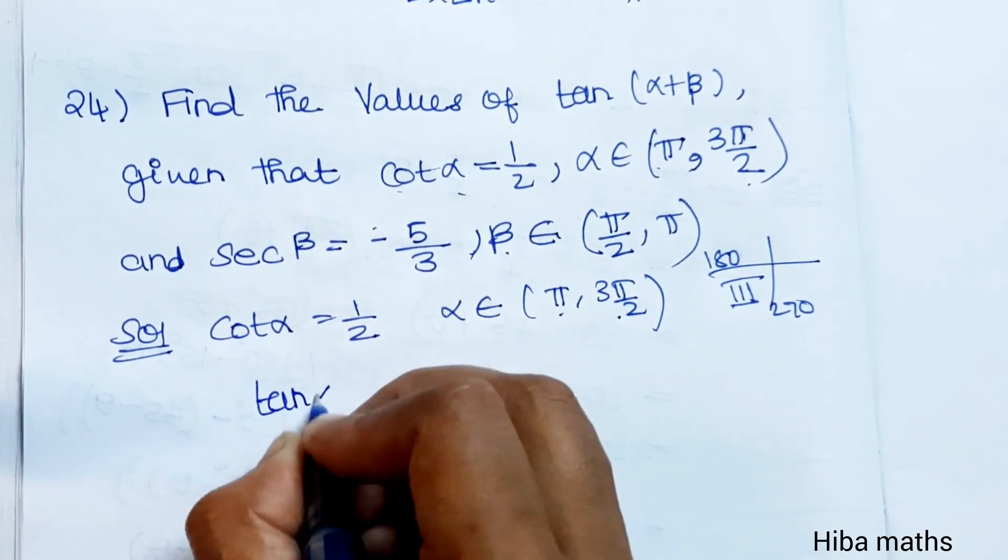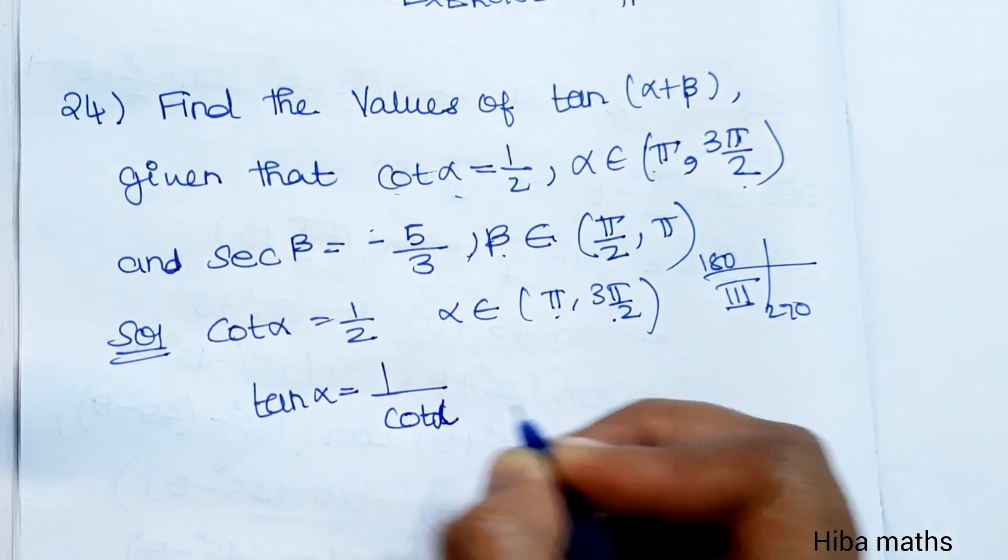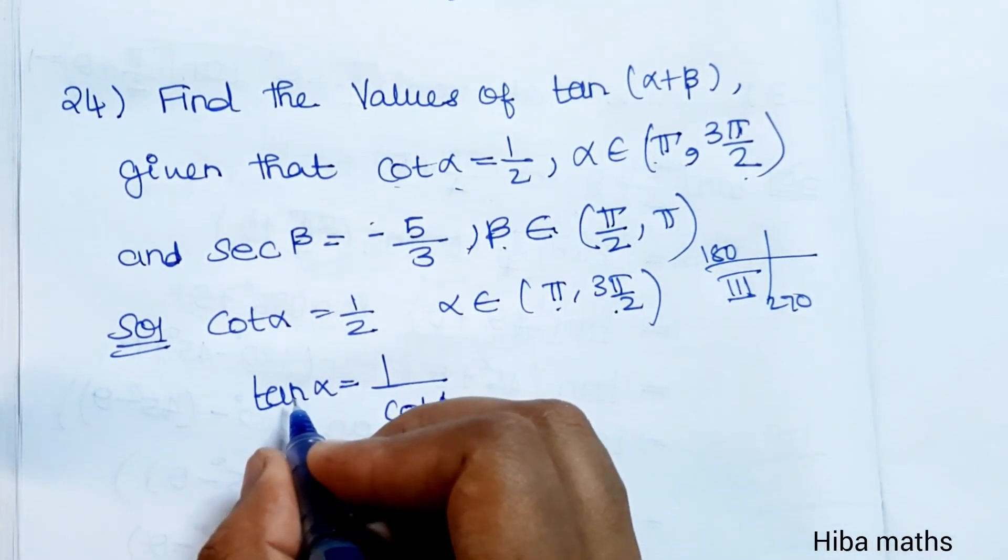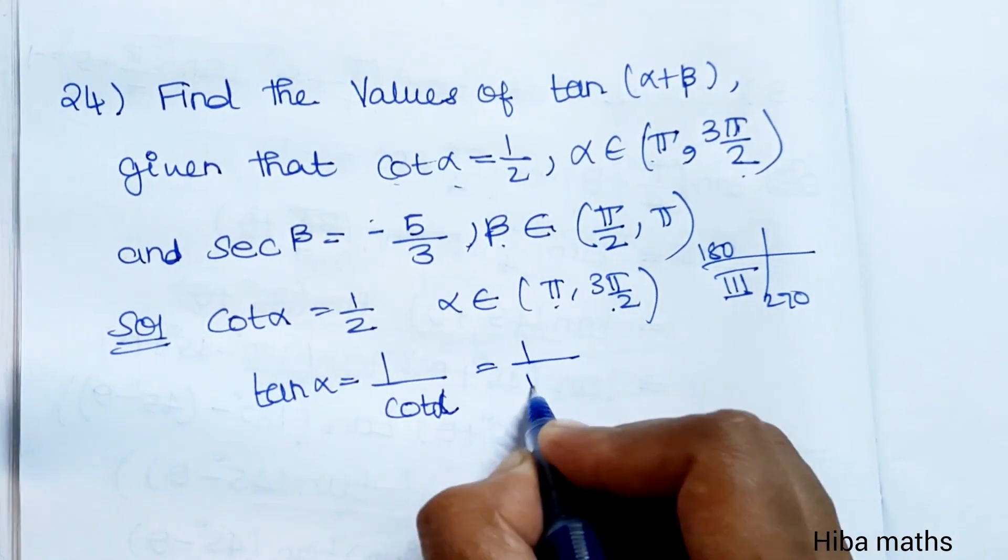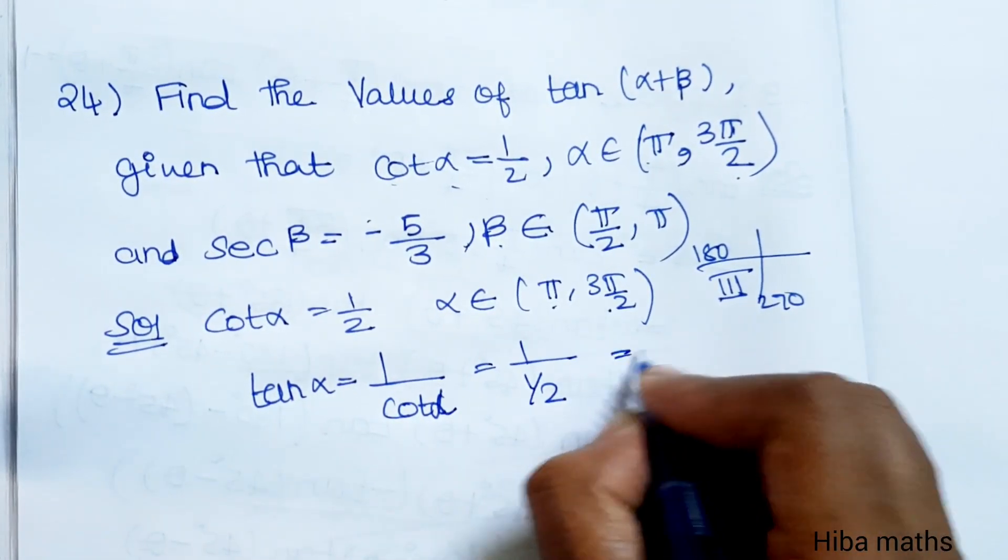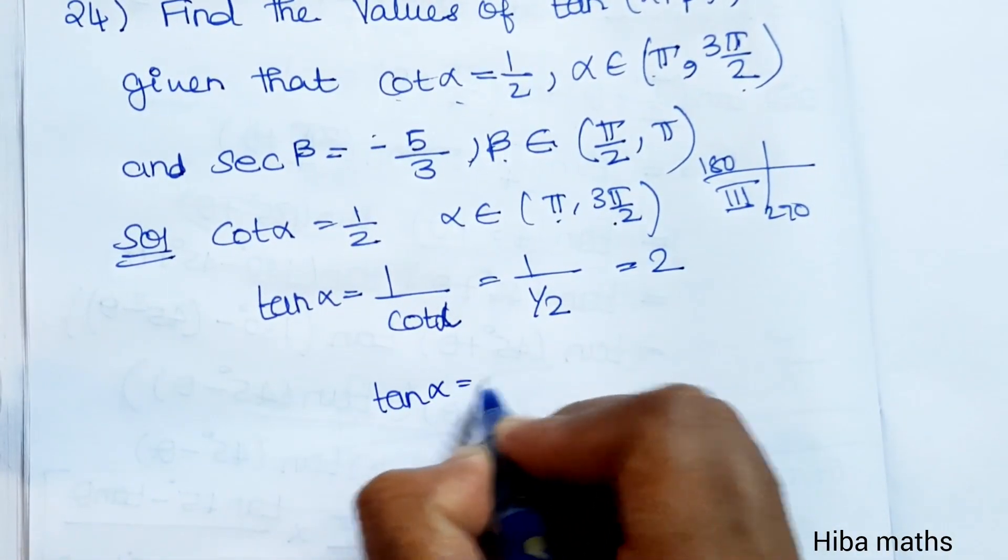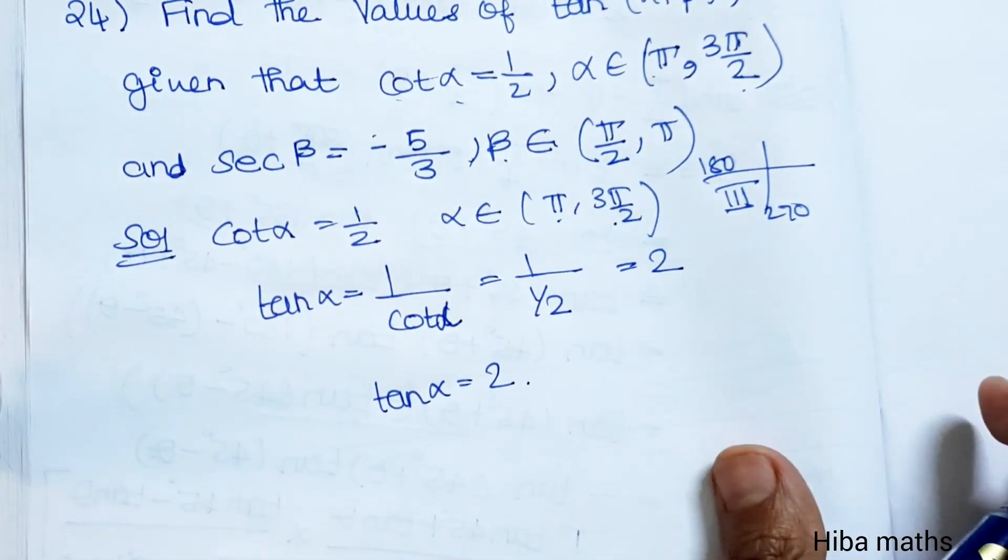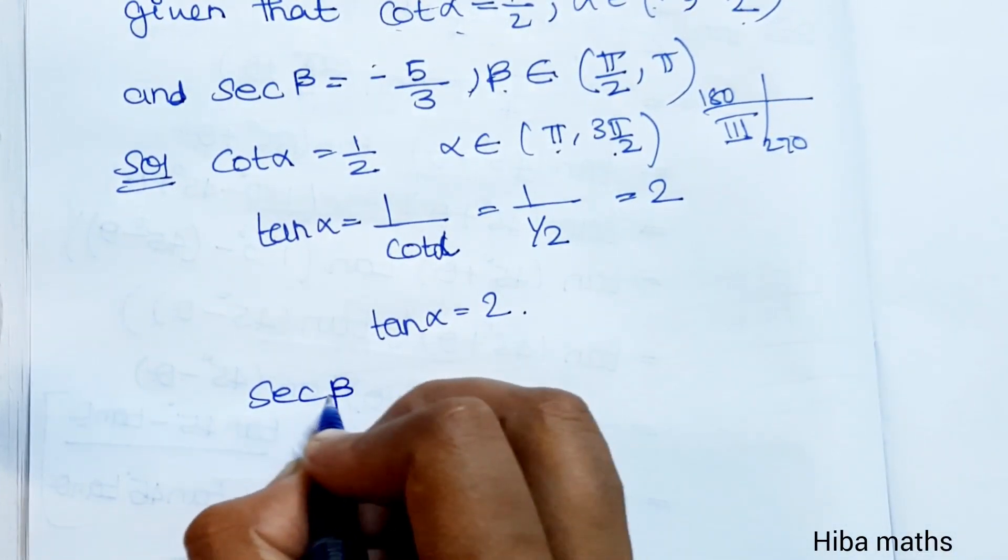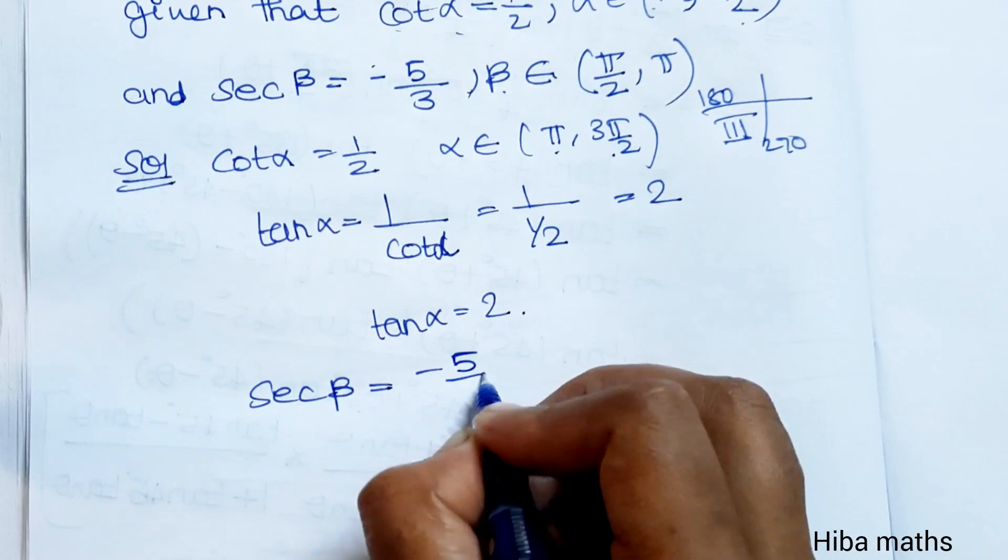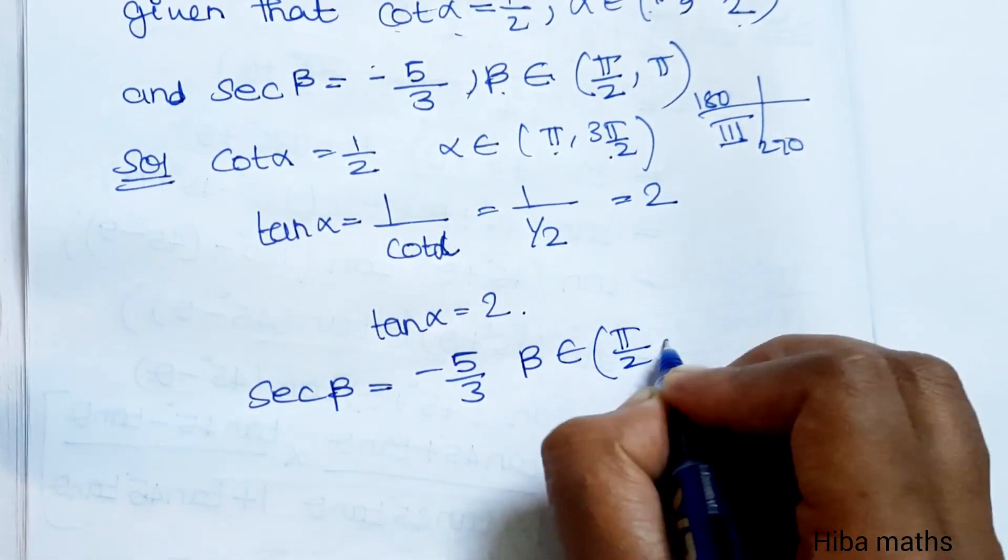Now tan α is equal to 1/cot α. If tan α equals 1/cot α equals 1/(1/2), the reciprocal gives 2. So tan α is equal to 2.